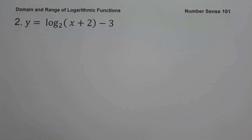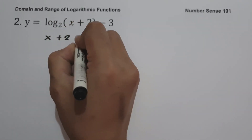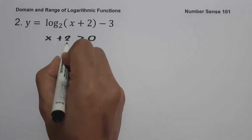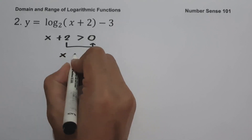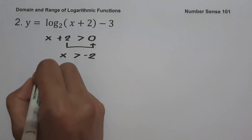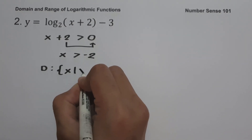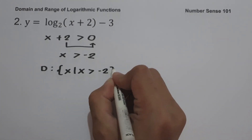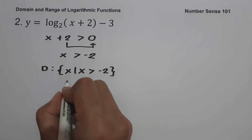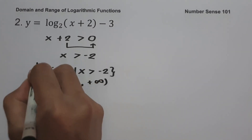Example number two: y equals log base 2 of (x plus 2) minus 3. To find the domain, let us equate our argument greater than zero, so we have x plus 2 greater than zero. Moving positive 2 to the other side gives us x greater than negative 2. In set builder notation: the domain is the set of x values such that x is greater than negative 2. In interval notation: from negative 2 up to positive infinity. This will be our domain.